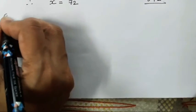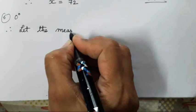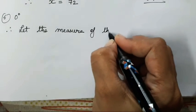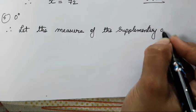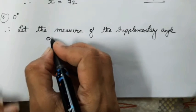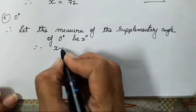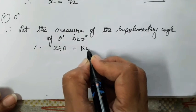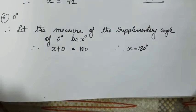The sixth one is 0 degrees. Any angle which is the supplement of 0 degrees is going to be 180 only. So let the measure of the supplementary angle of 0 degrees be x degrees. Therefore 0 plus x equals 180. Therefore x equals 180. The supplementary angle of 0 degrees is 180 degrees.